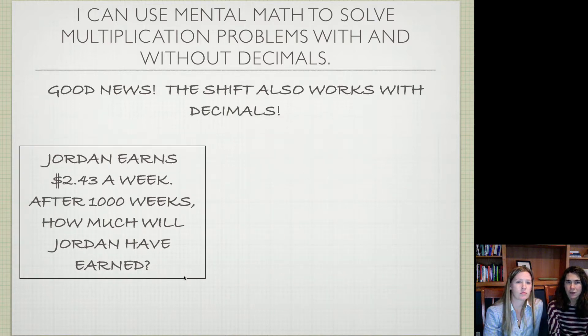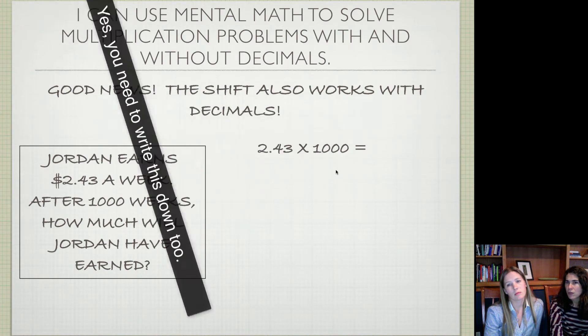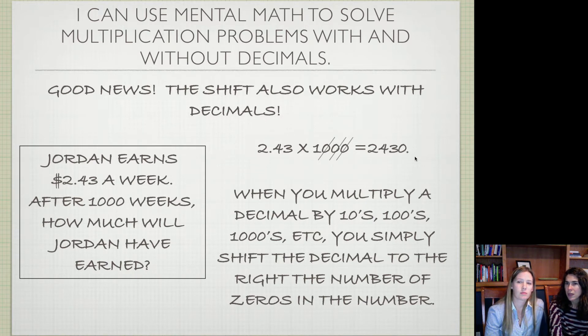We're going to try this again. Same thing, Jordan is earning $2.43 a week. Now we're going to think about after 1,000 weeks, which is a really long time again, how much will Jordan have earned? We're going to apply that same idea. We have $2.43 and we have one, two, three zeros. Here we have $243, and here's our decimal originally. We're going to move our decimal one and two and three. Of course, just as a placeholder, we want to tack on that zero there.